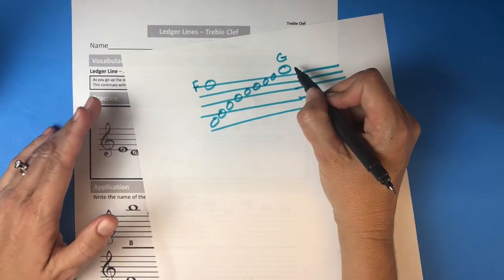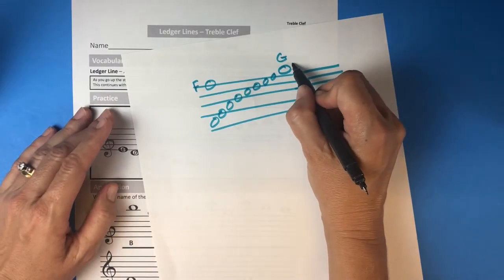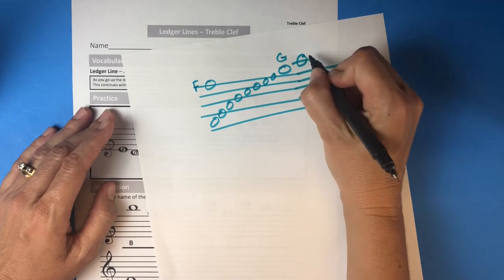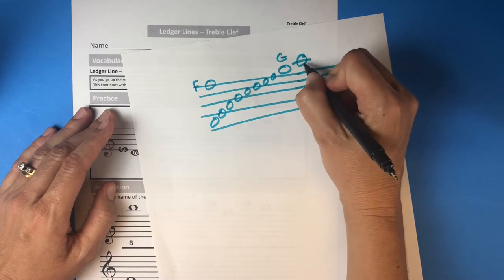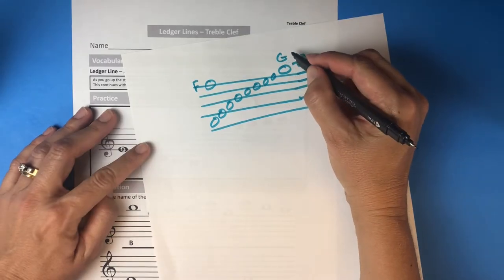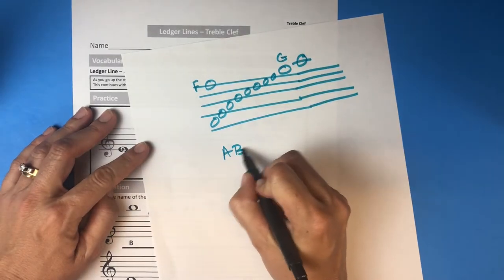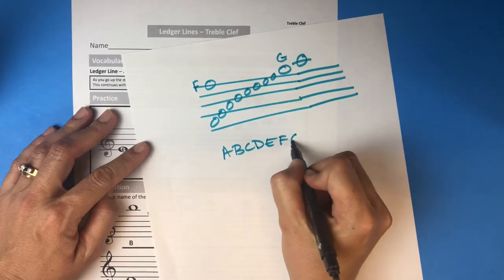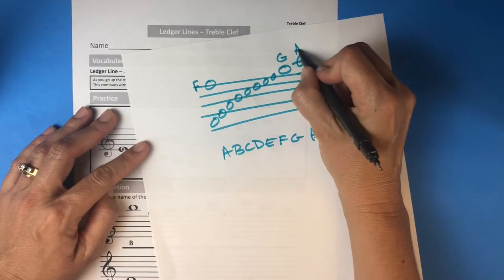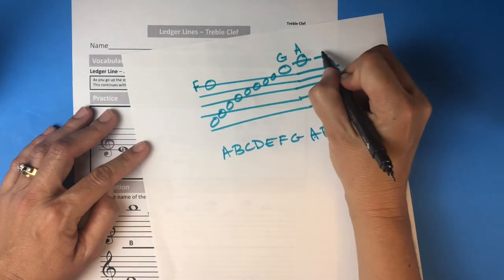Now we're out of lines and we're out of spaces. We've used our space, now we need another line. So we're just going to draw a little tiny line - that's called a ledger line. You're going to put the note head on the line, which means half above, half below. And the note after G in the musical alphabet - you just repeat, right? A-B-C-D-E-F-G, A-B-C-D. So after G is A.